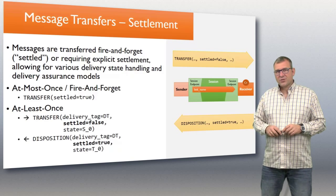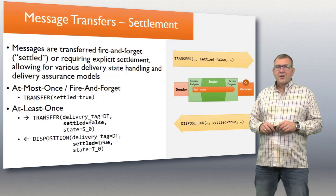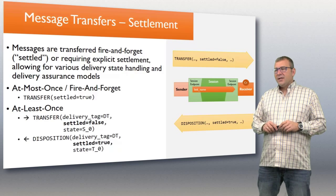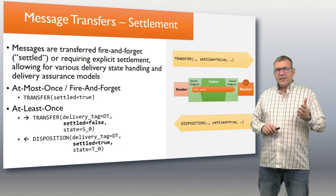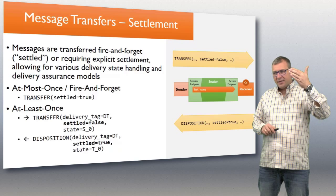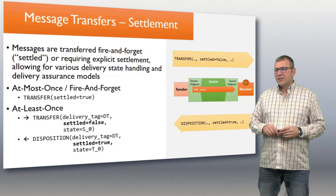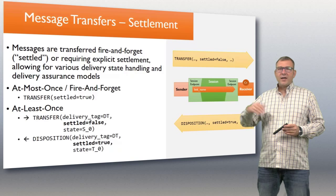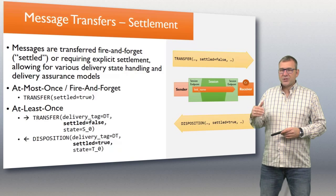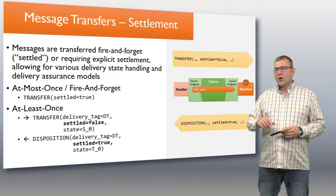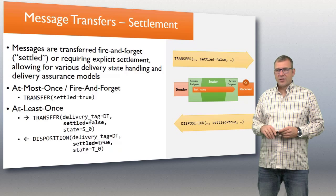Then there's the at-least-once transfer model where you require settlement. The settlement happens by setting settled false on the transfer, and then you get a reply that says disposition. The disposition will say yes, we have just settled, and also communicates the state.